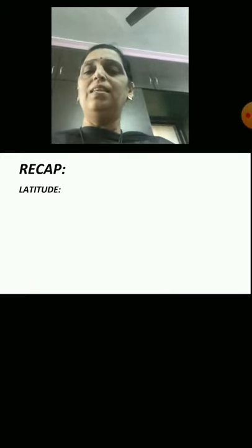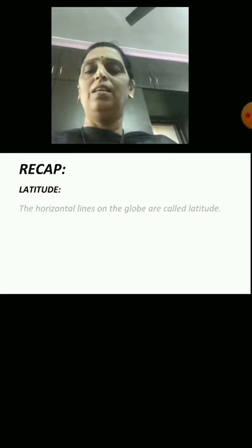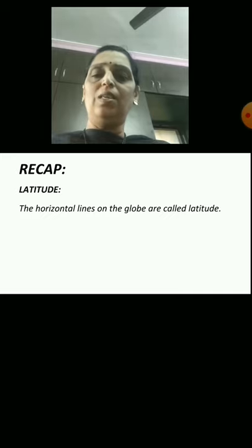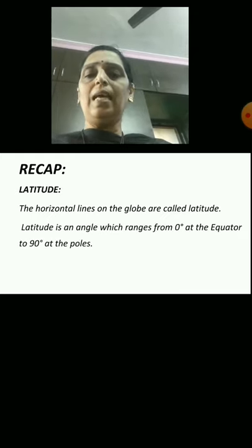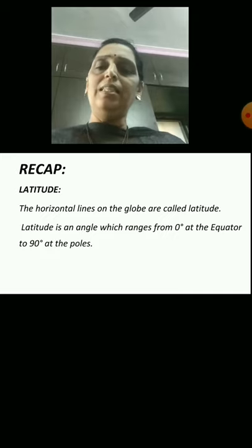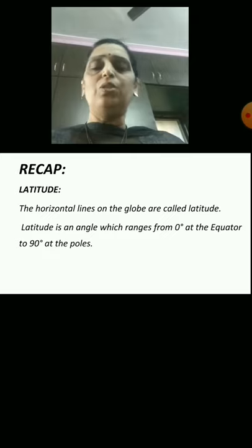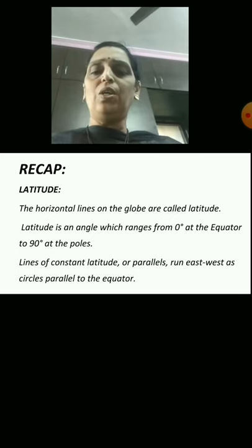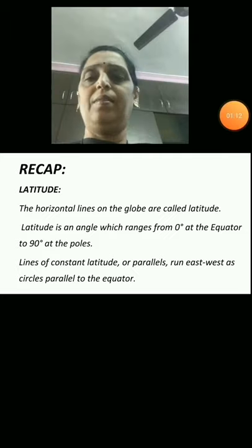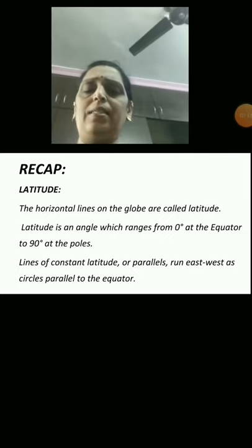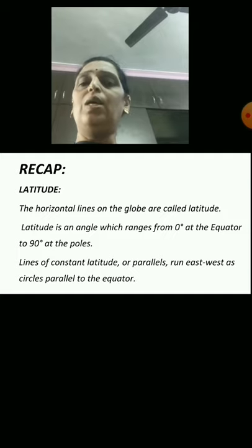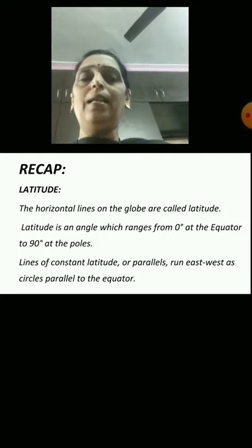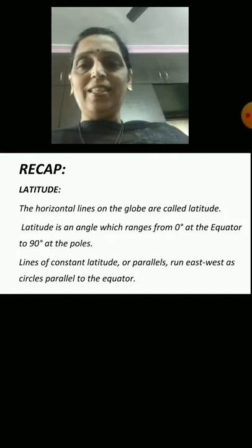What is latitude? The horizontal lines on the globe are called latitude. Latitude is an angle which ranges from 0 degrees at the equator to 90 degrees at the pole. Lines of constant latitude, or parallels, run east-west as circles parallel to the equator. Constant means occurring continuously, and parallel means with the same distance, as you have studied in mathematics.